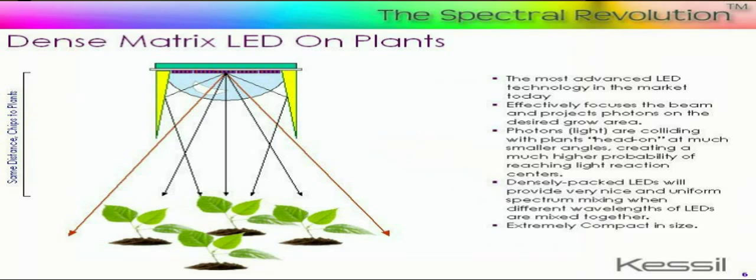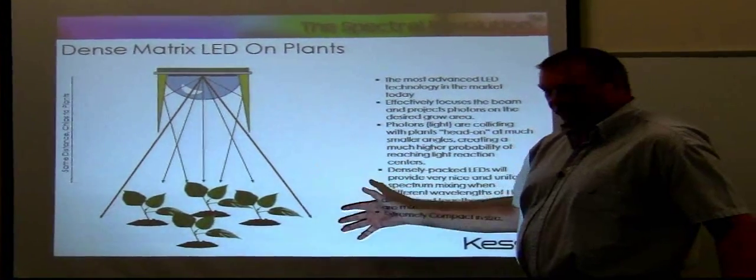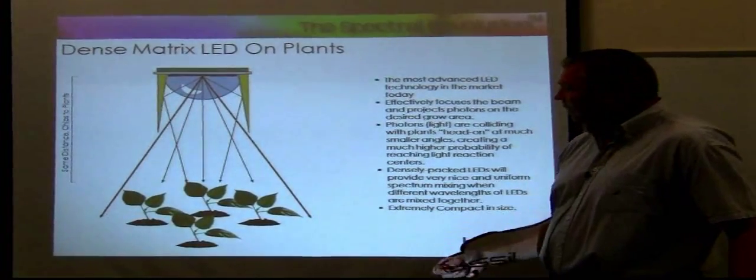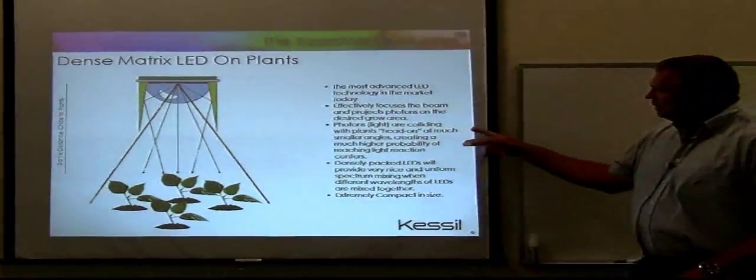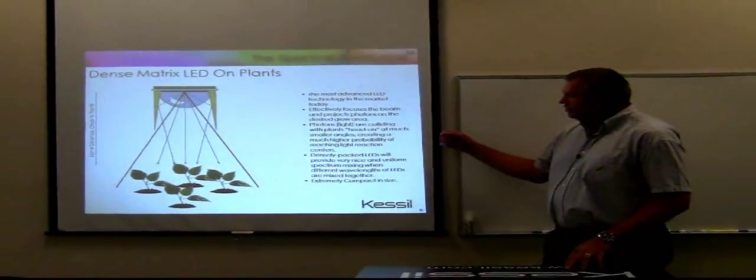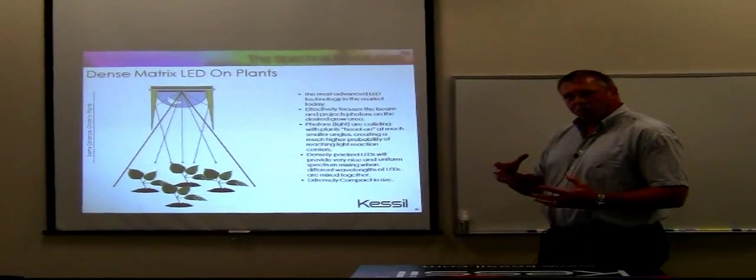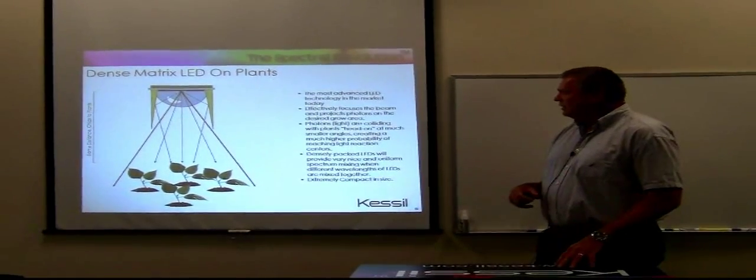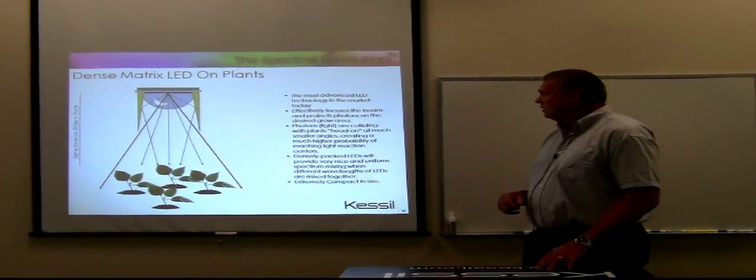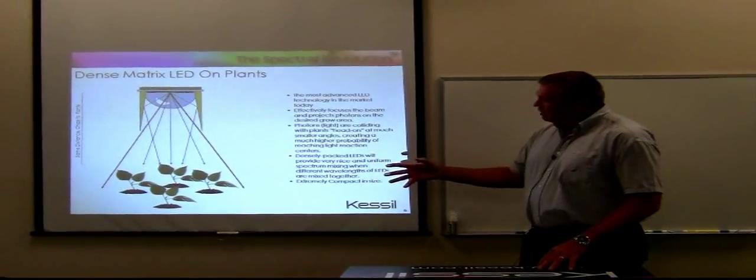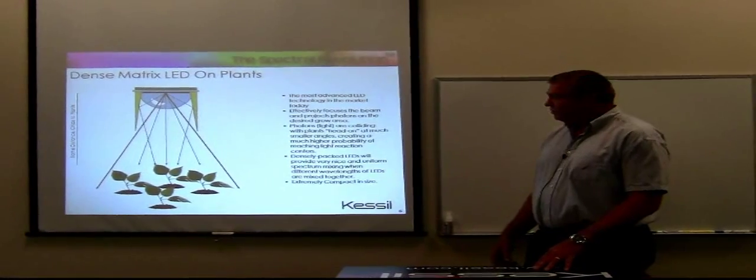And also, by designing the reflector element appropriately, all of the light energy can be directed into a well-defined, confined area so that it's all getting to the plants that are being grown. The photons and the light energy is hitting the plants at a much more uniform set of narrow angles, much more like what happens with natural sunlight. And as a result, you get very good penetration of light energy into the plant surfaces.